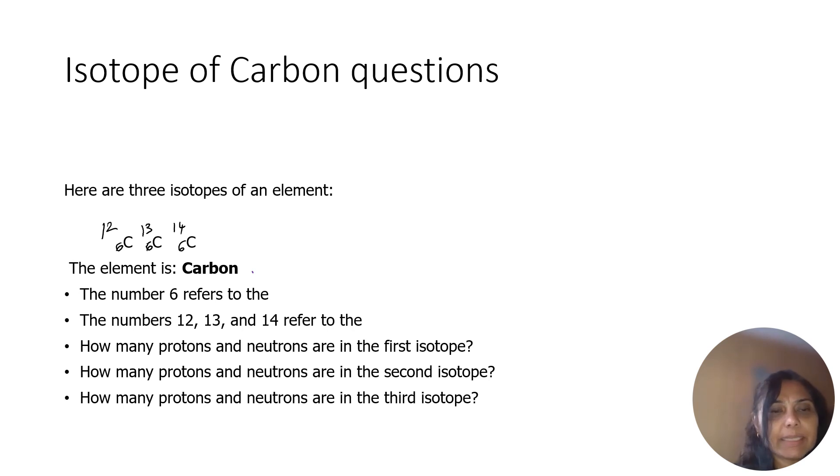The element is carbon. The number 6 refers to the atomic number, which is also known as the proton number. The numbers 12, 13, and 14 refer to the mass number, which is the total number of protons plus neutrons.